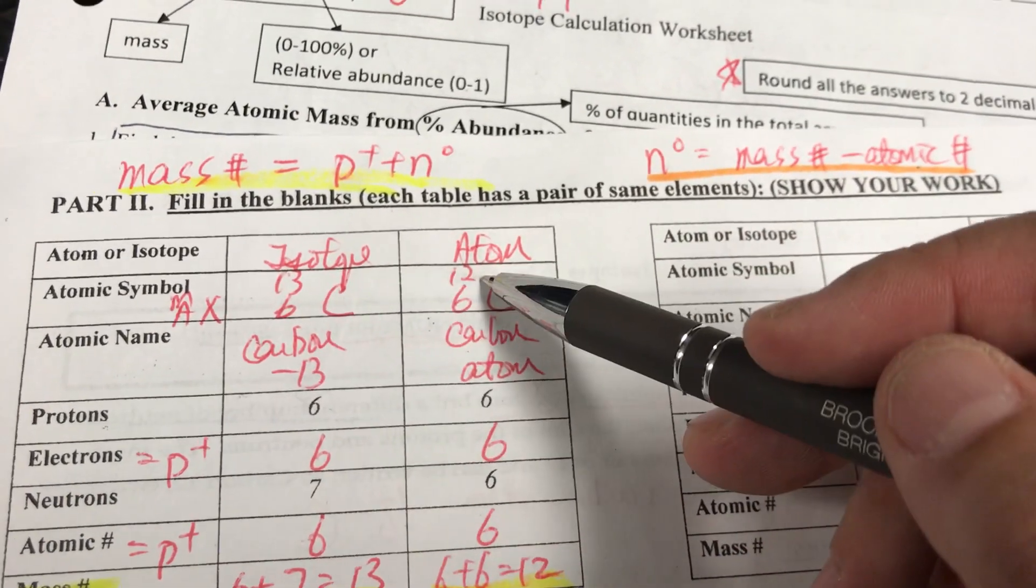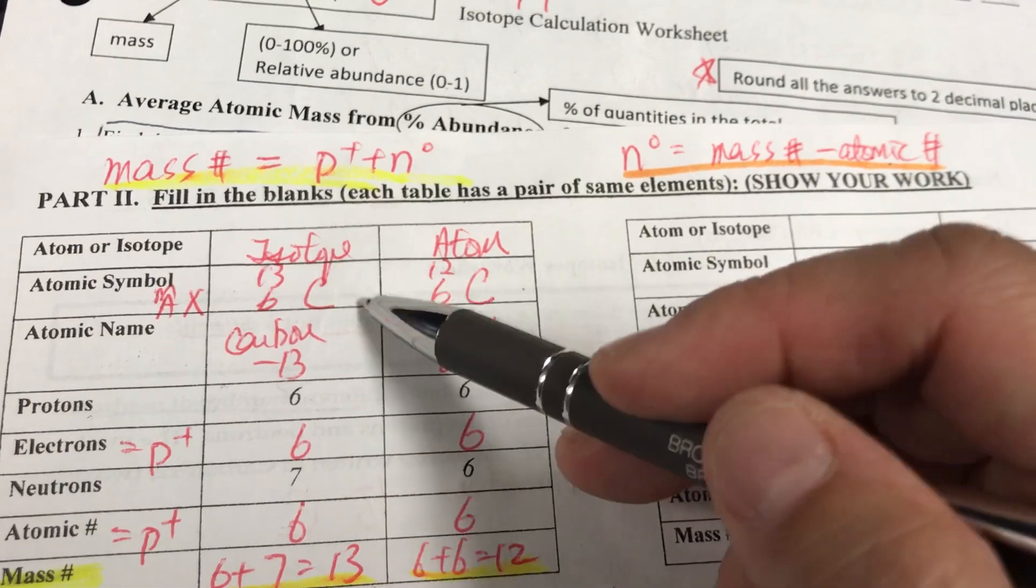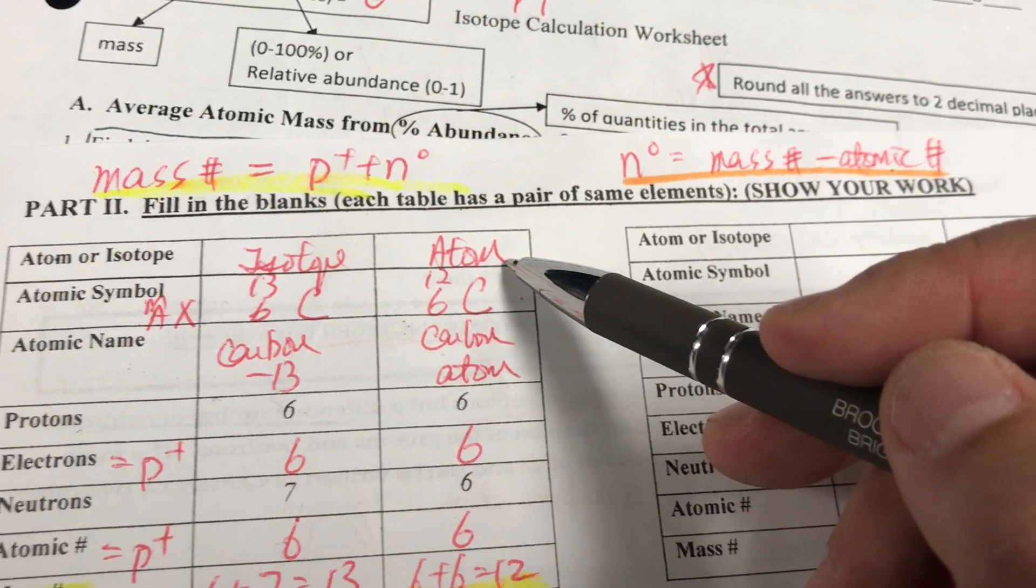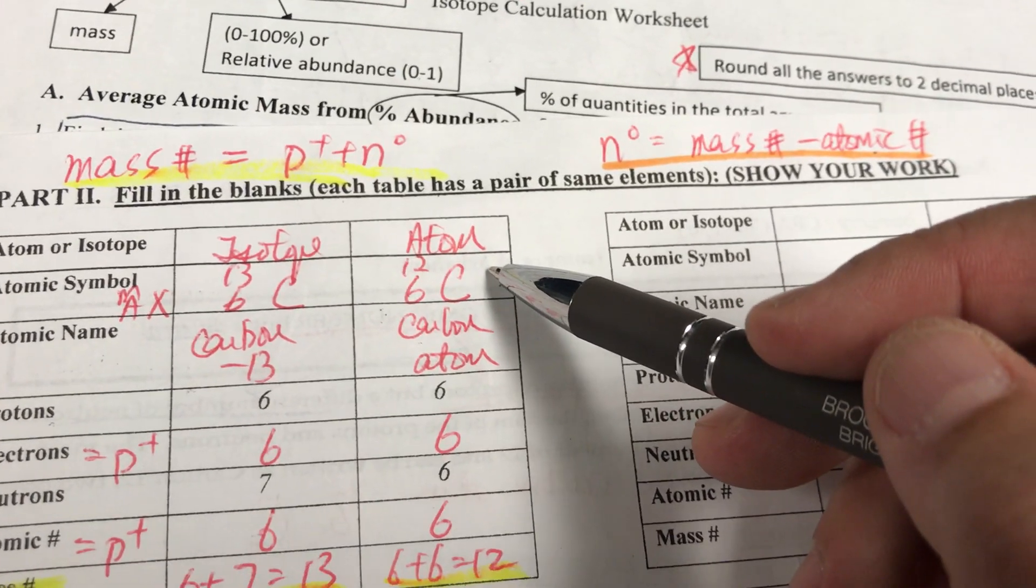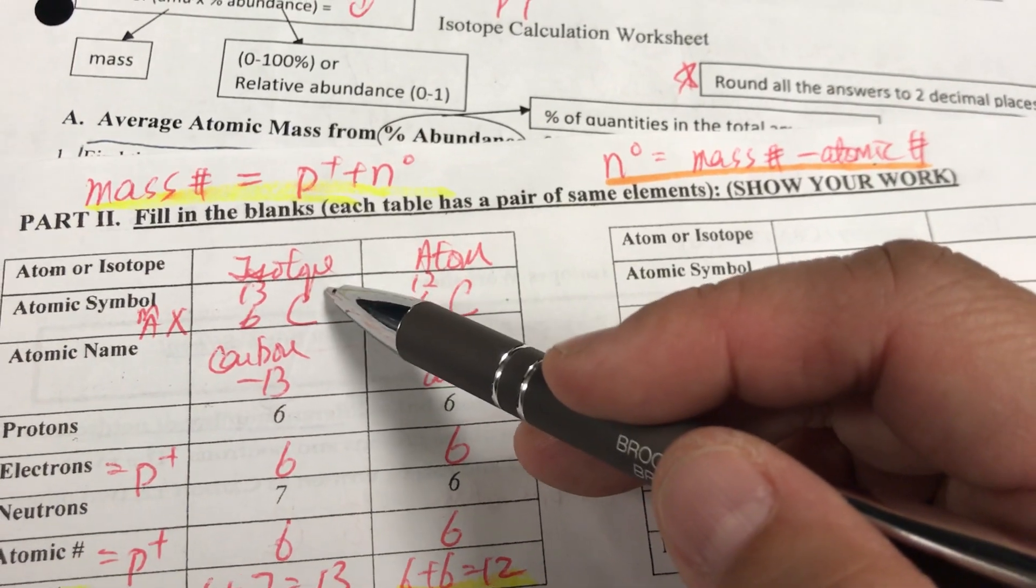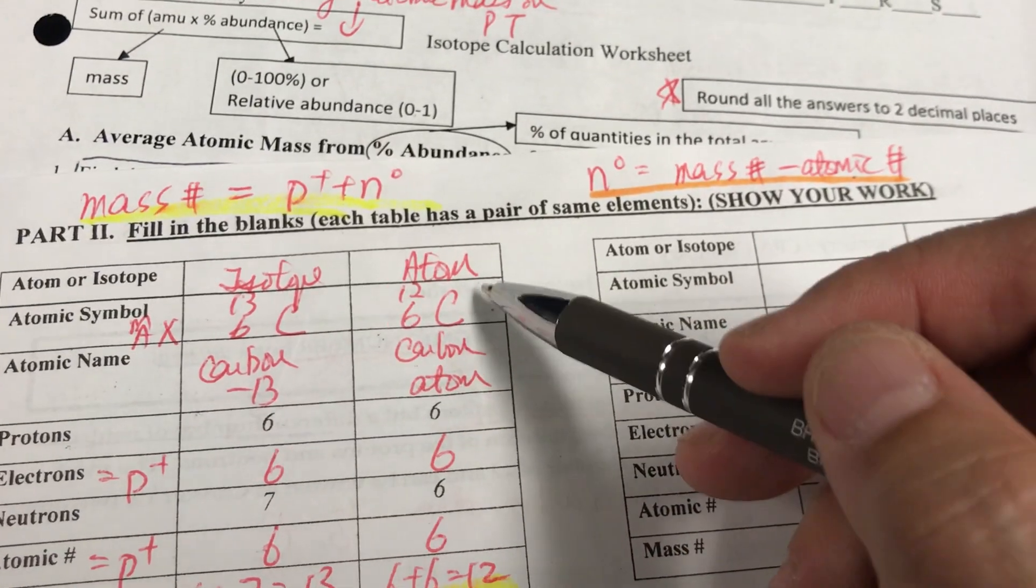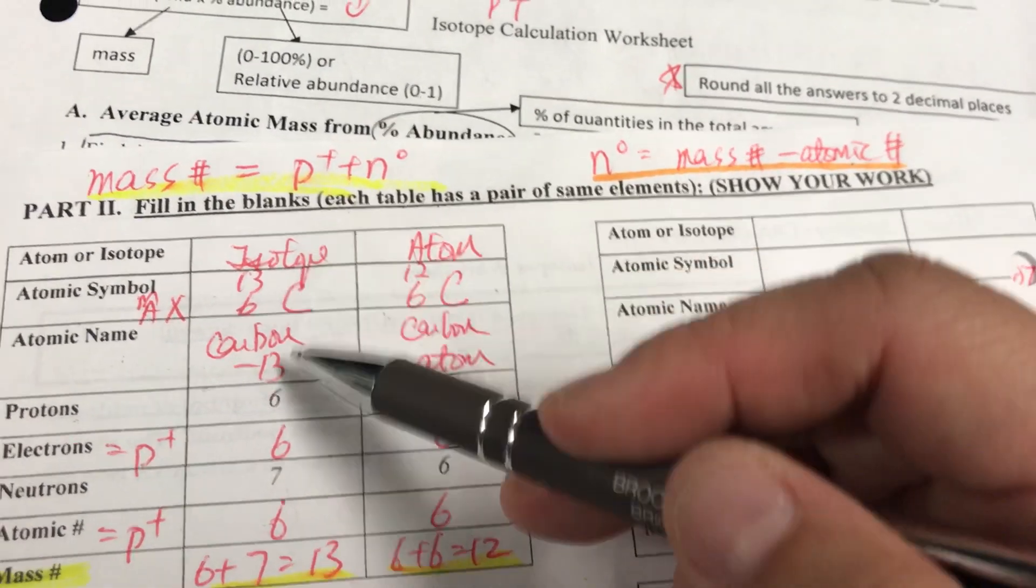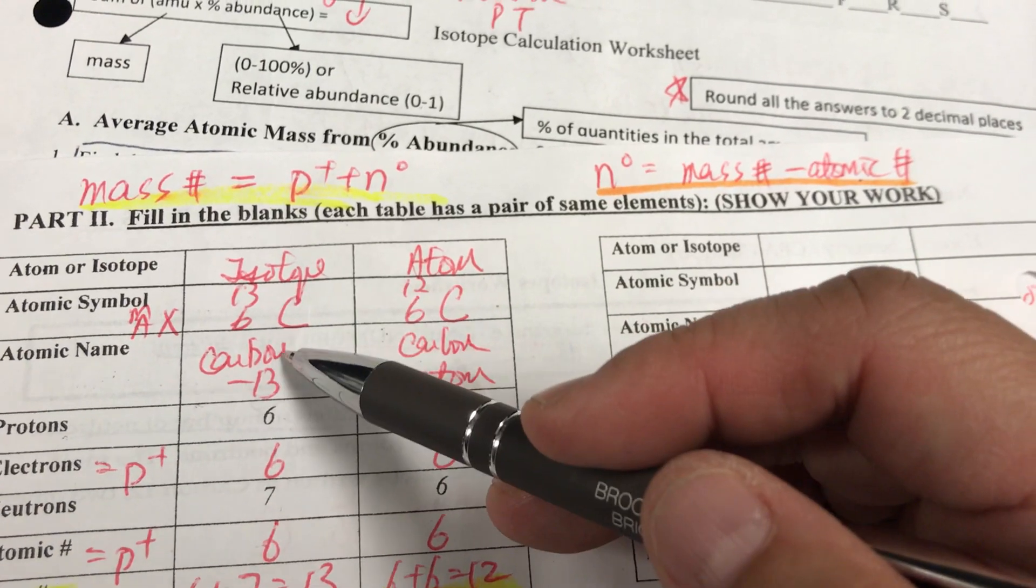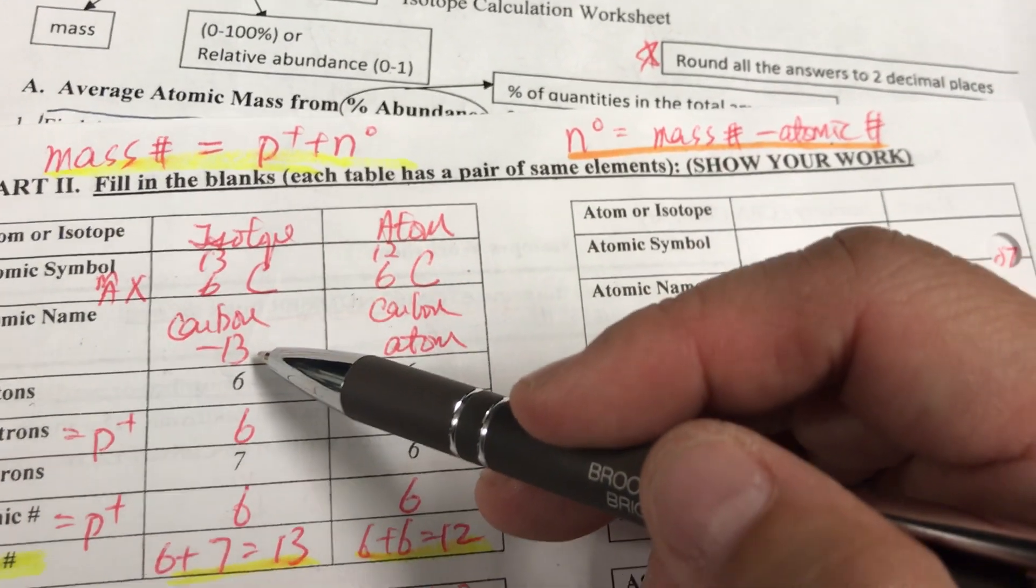So then we can write the mass as 13-6-C and 12-6-C. From this we can tell that this one is an atom because it has the same mass number as the periodic table. This will be an isotope because it's different. Since this is an atom, we name it carbon atom. This will be carbon dash 13, the element and then the new mass number.